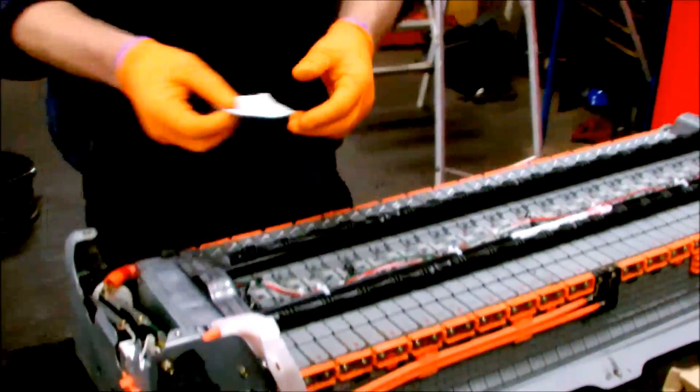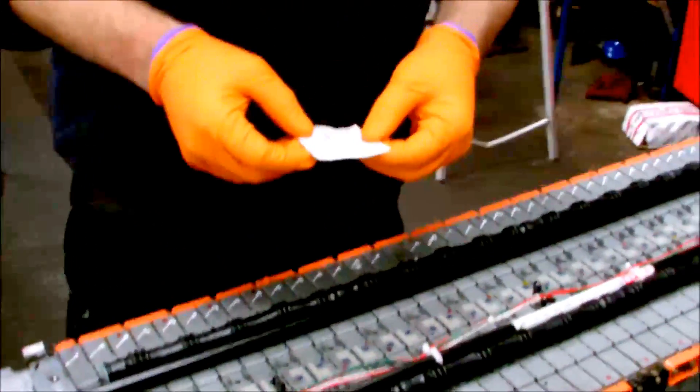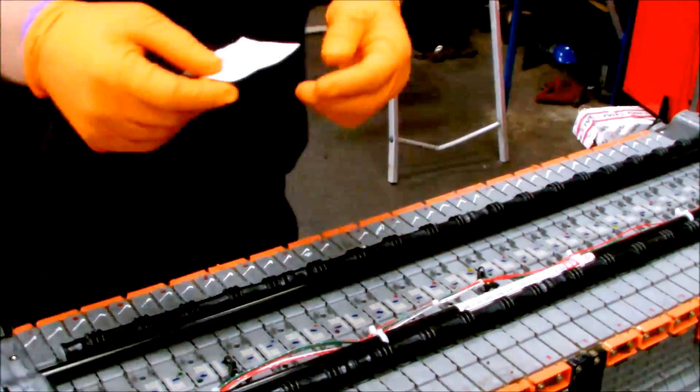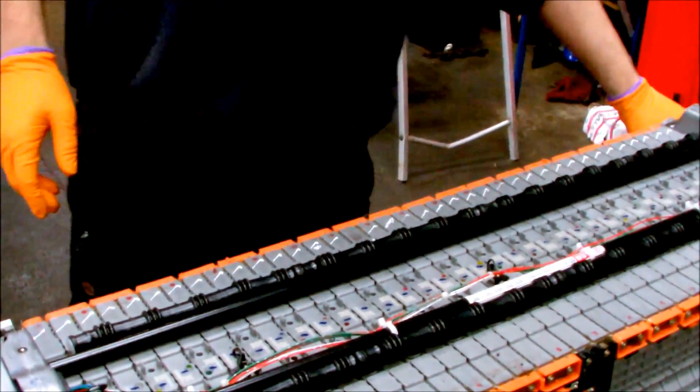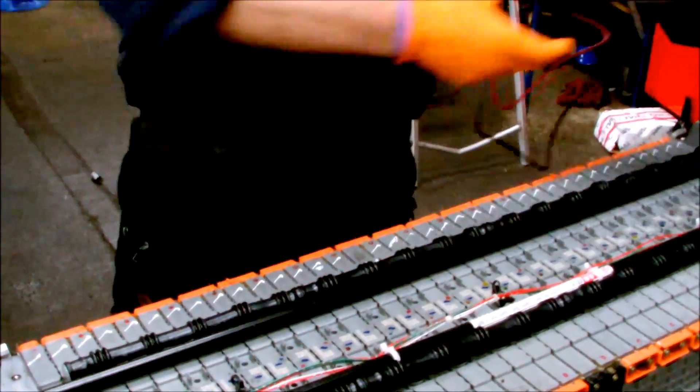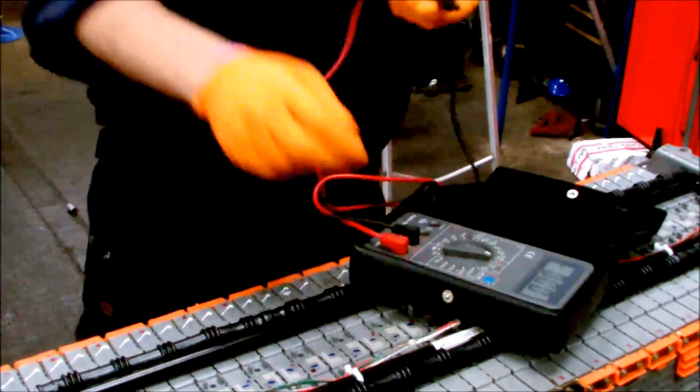This vehicle came into the workshop with trouble code P3000, battery abnormality, which we've received the printout for. You'll have to excuse any background noise because this is a professional workshop with plenty of work going on.